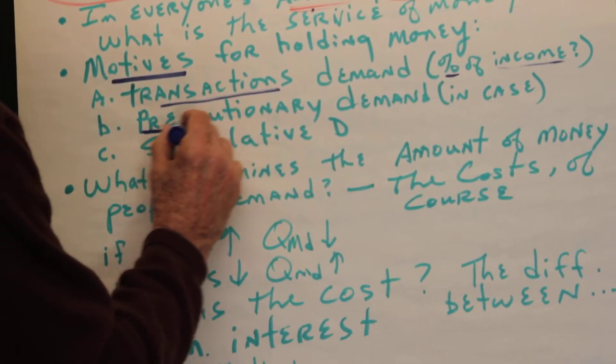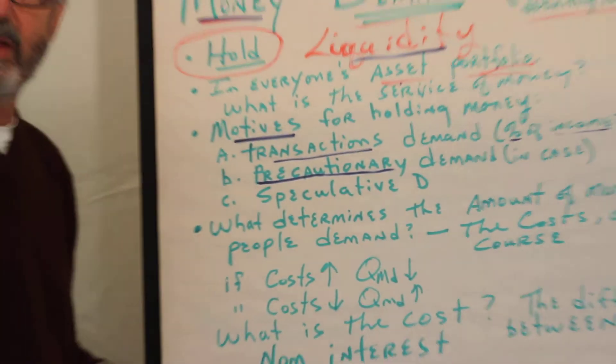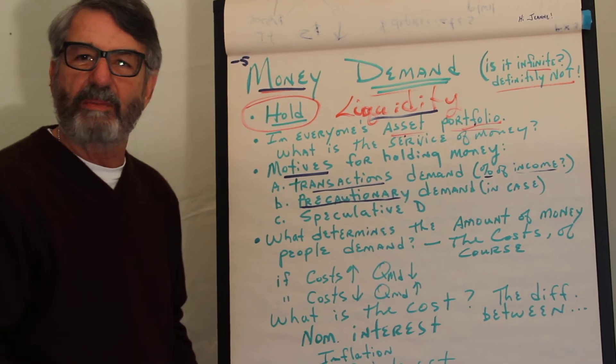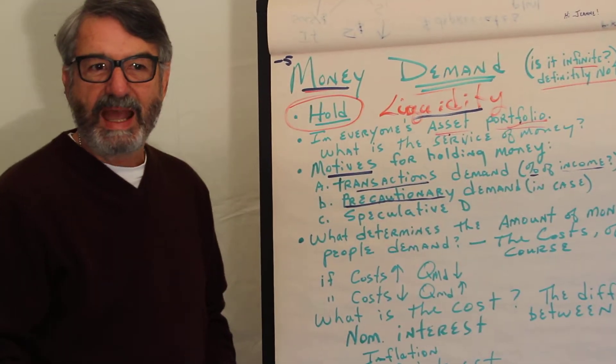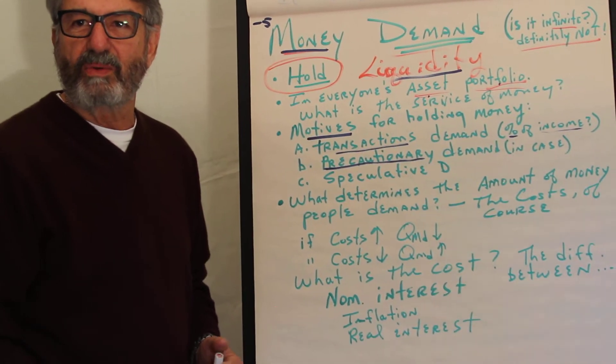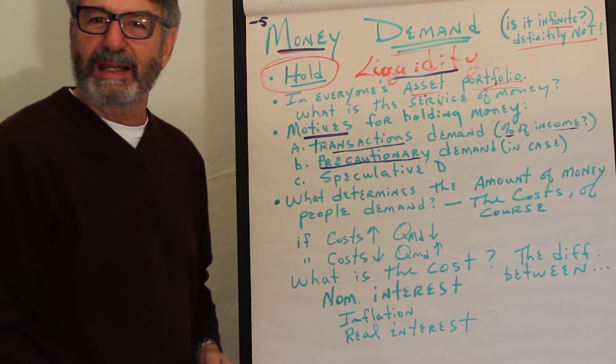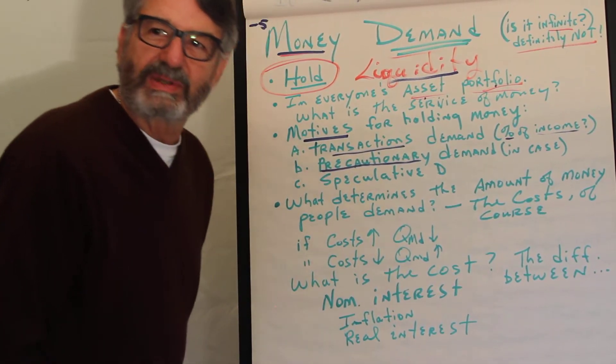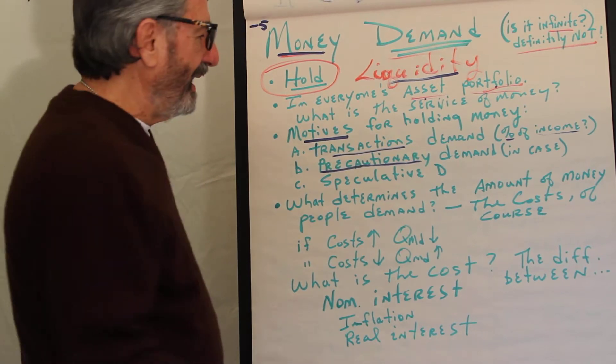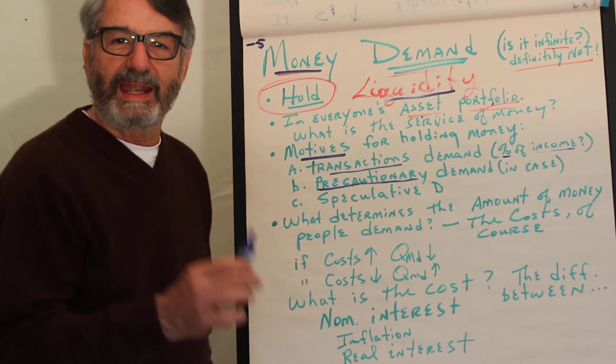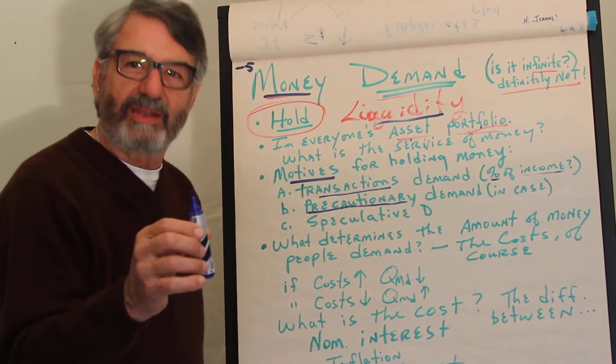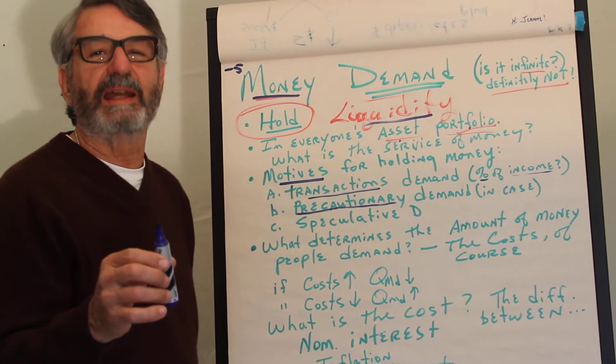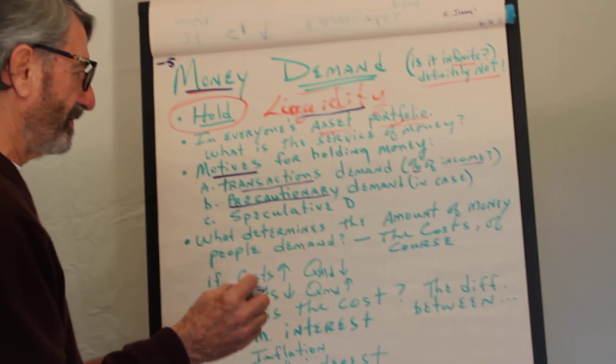The precautionary, in case something happens. You know, I always carry a $50 bill tucked away in my wallet in case something happens. I knew a guy who went to Tijuana with a $100 bill folded neatly in his sock. It was his precautionary demand for money. He wasn't going to spend it on anything. The purpose of that was, if he ran across a federale who didn't like him, he thought that that would help him with his situation.